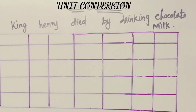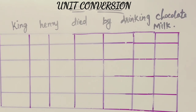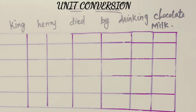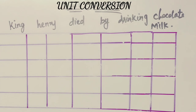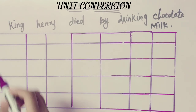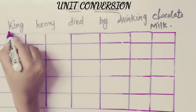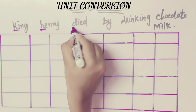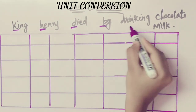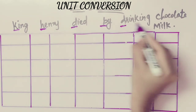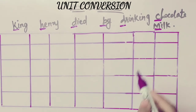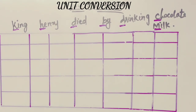So, you need conversion. What should we do with this? If you put this statement, it will be easy to answer. In this sentence, the first letters are: K, H, D, B, D, C, M. This is the main sentence.